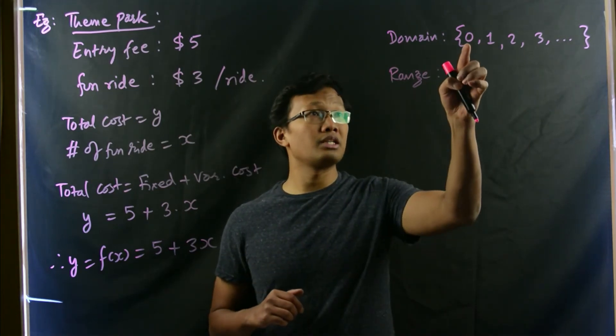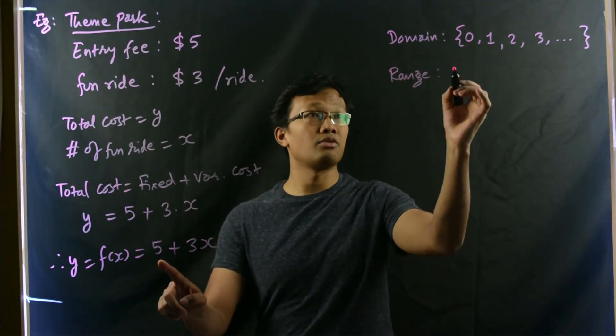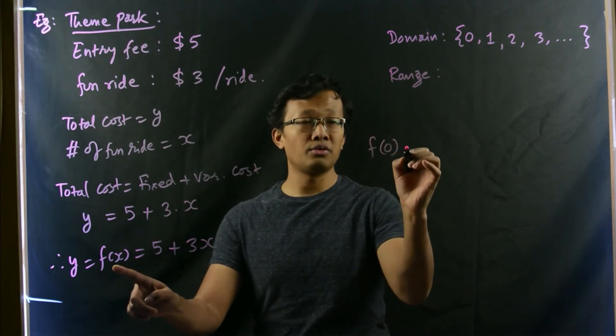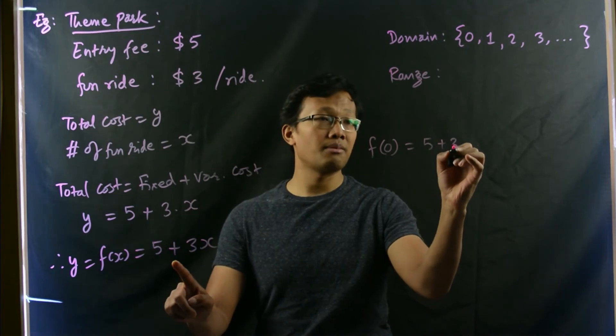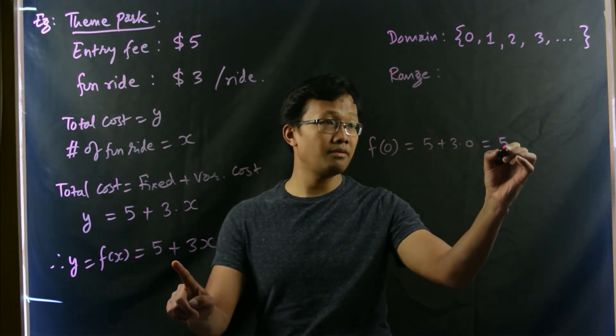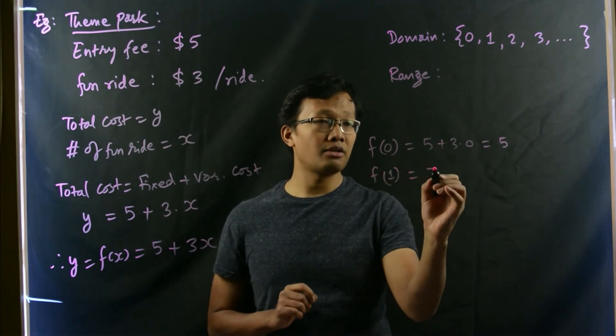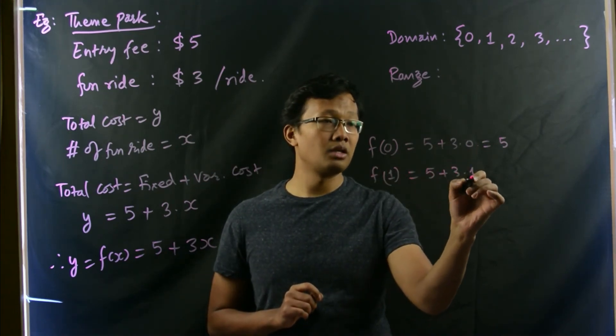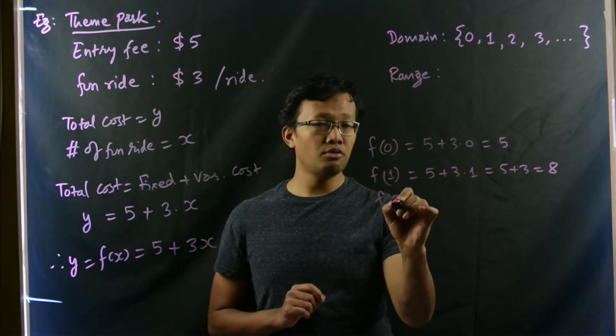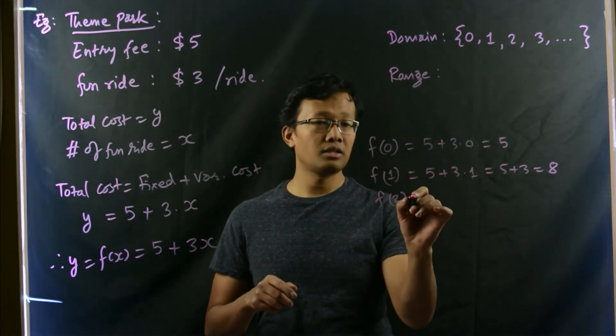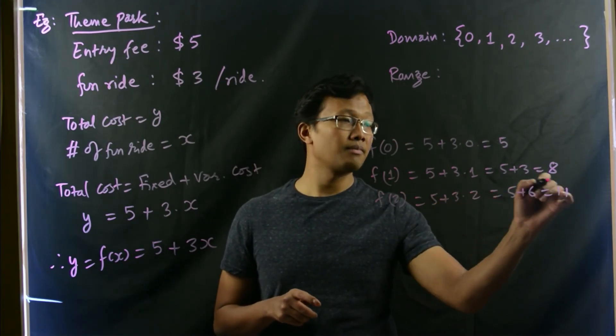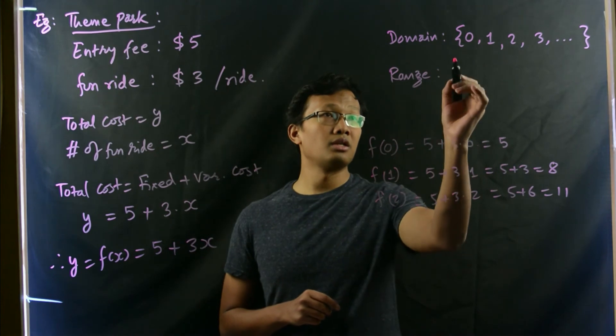And the range will be according to what we have in the domain. Let's plug in this 0 in here. This would be for 0 fun rides, we would just go for f of 0, which would be 5 plus 3 times 0 is 5 plus 0 is 5. For 1 fun ride, that would be simply 5 plus 3 times 1, which is 5 plus 3 is 8. f of 2, that means 2 fun rides. 5 plus 3 times 2 is 5 plus 6, which is 11, and so on. It goes in this way.